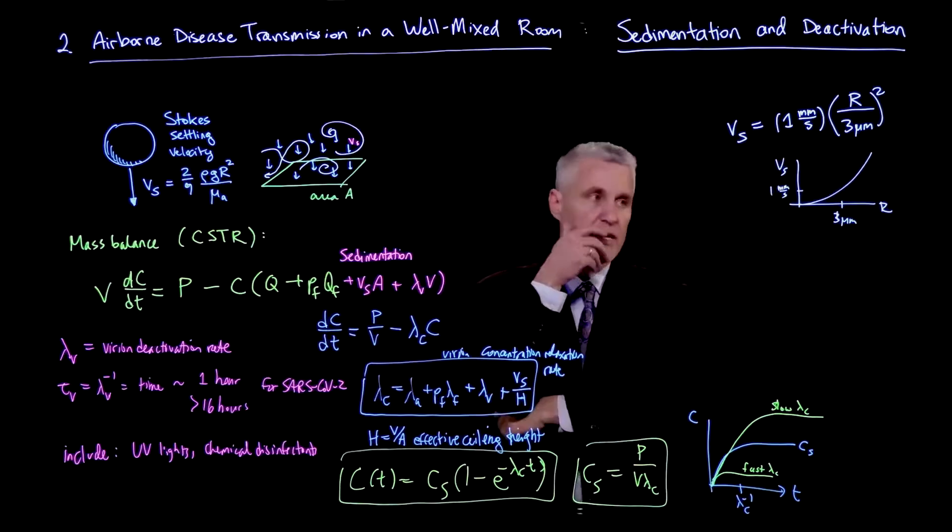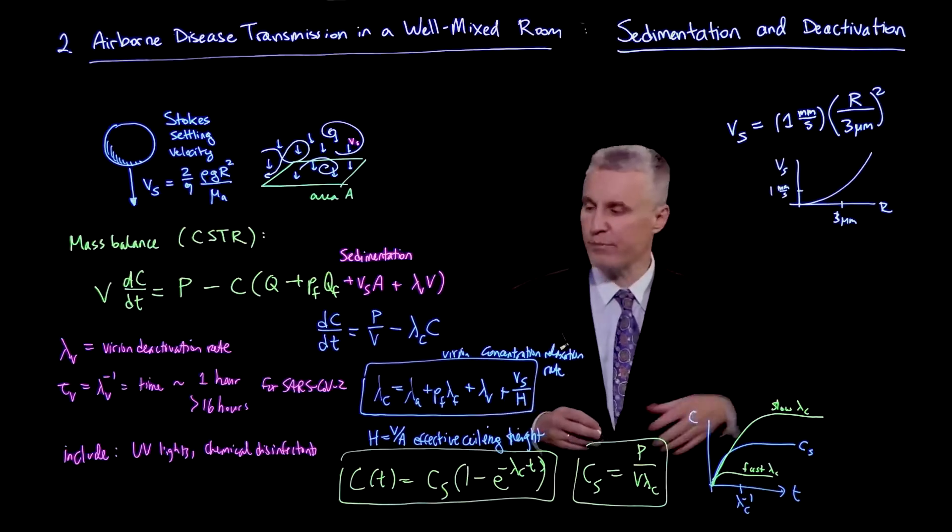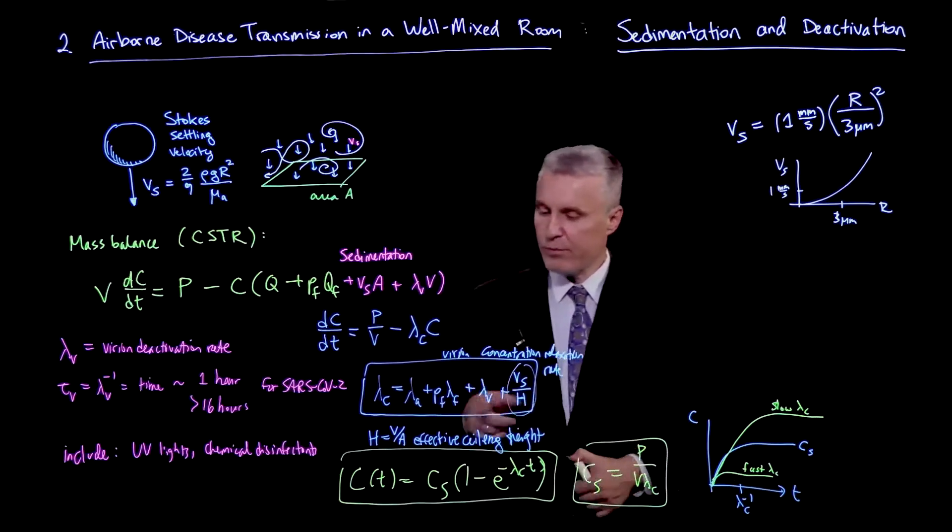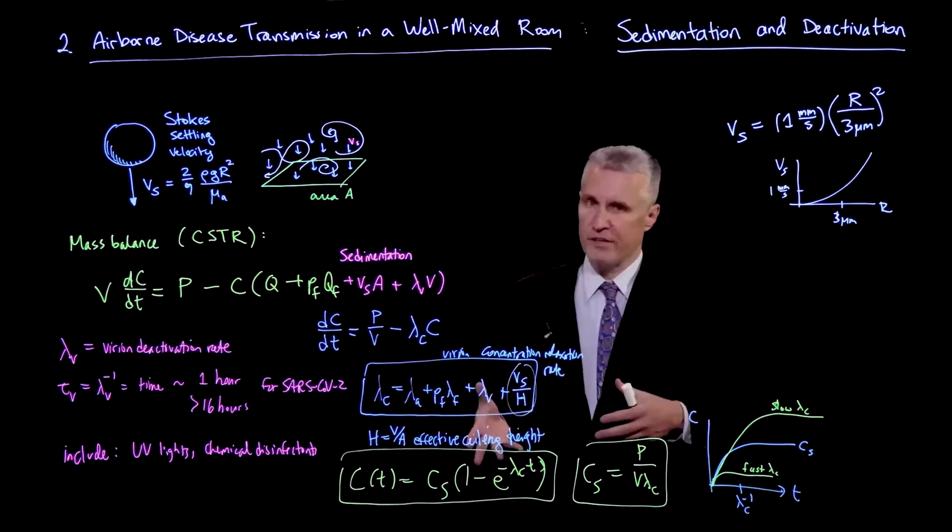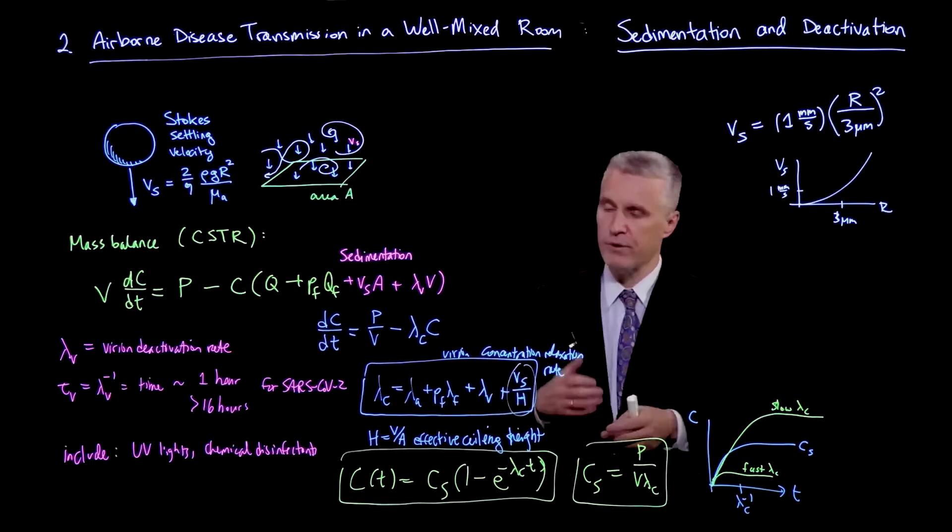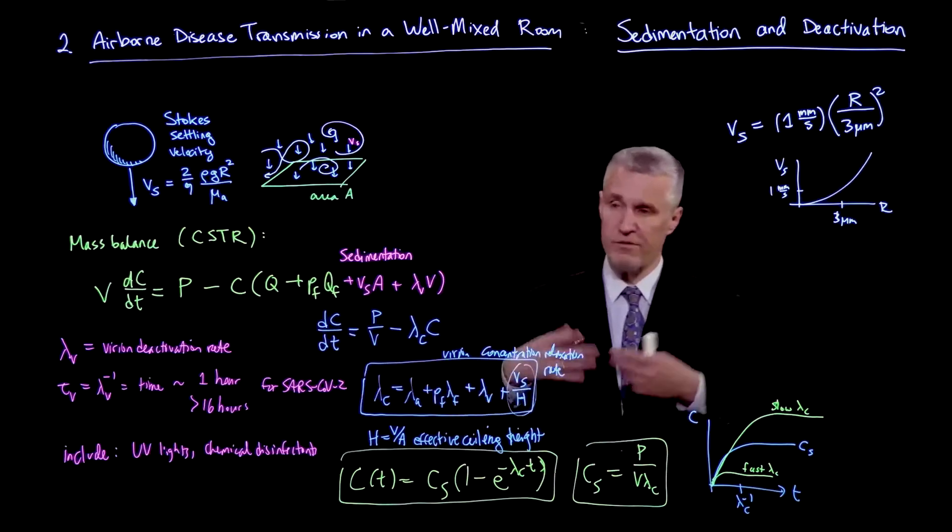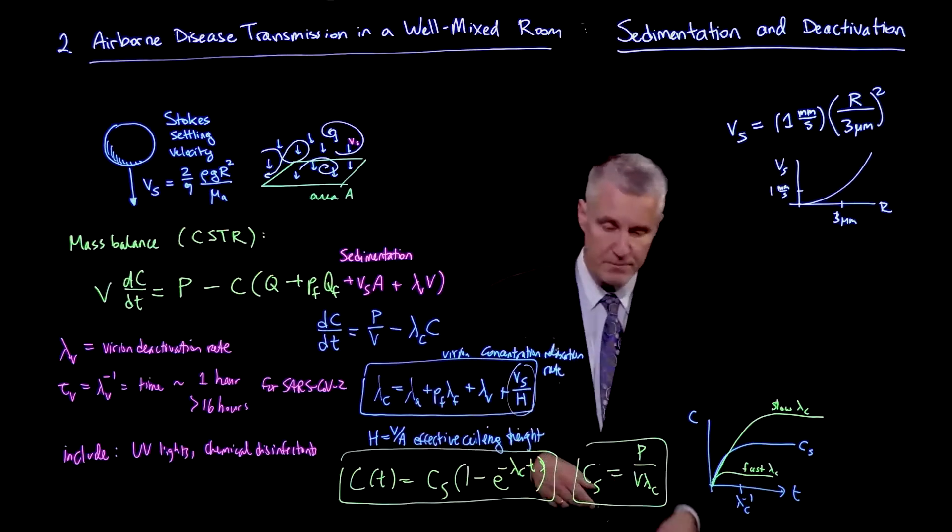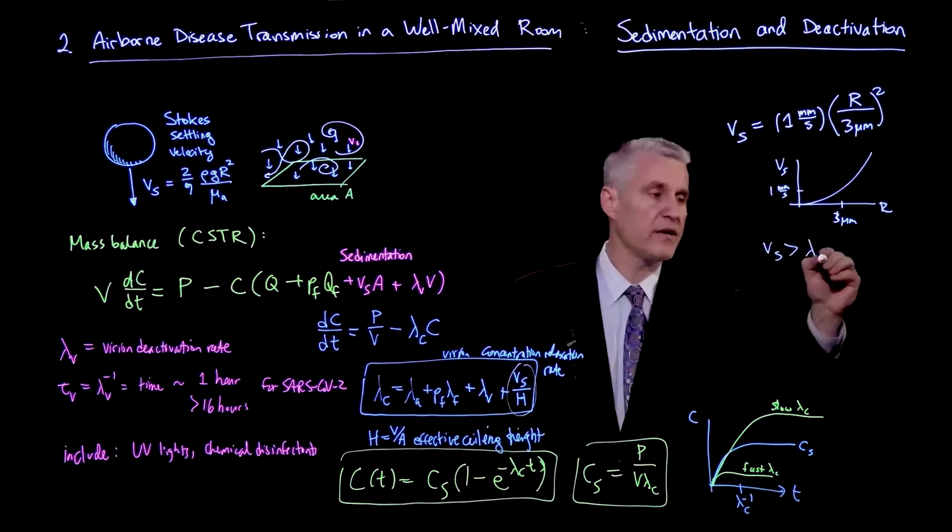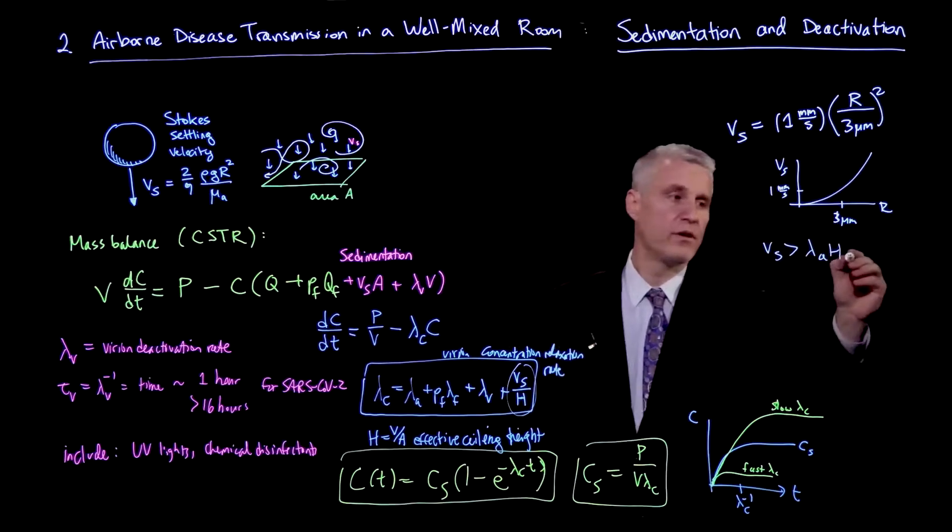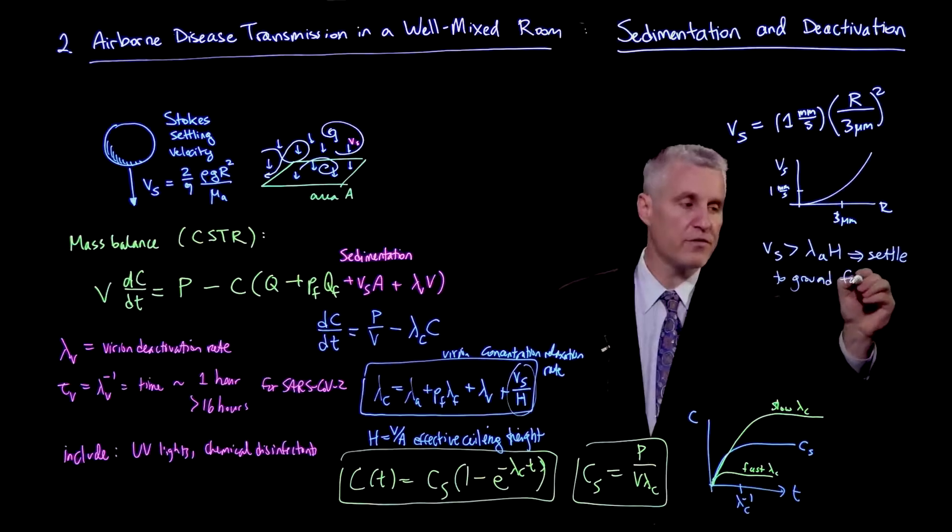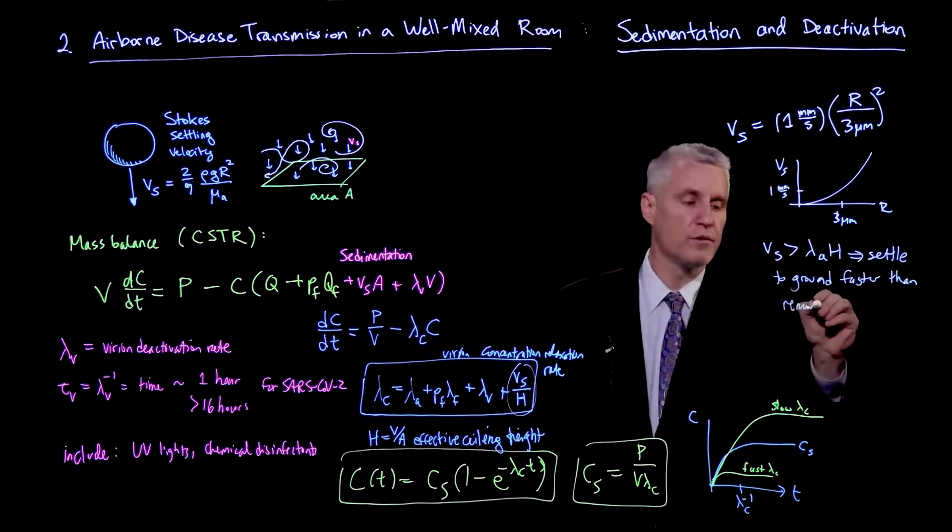And so an interesting question to ask is how does the settling compare to the other values here? So basically, how big is this term relative to the others? Now, the most important one here really is the lambda_a, because that's the overall ventilation in the system. We know that's a really important parameter. That was the first one that I presented to you. The other ones are kind of corrections that can be important, but the thing you really want to think about is this lambda_a.